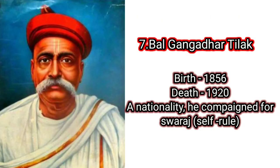7. Bal Gangadhar Tilak. Birth: 1856, death: 1920. A nationalist, he campaigned for Swaraj, self-rule.